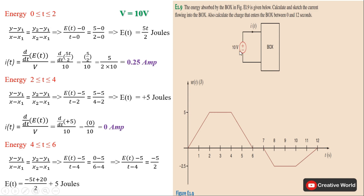We know that the voltage across the box is 10 volts. Now calculating the energy between time interval 0 and 2 seconds. Using the straight line equation: (y − y₁) / (x − x₁) = (y₂ − y₁) / (x₂ − x₁), where y₁ and x₁ are the initial points and y₂ and x₂ are the final points on the axes. On the y-axis we have taken energy E as a function of time.